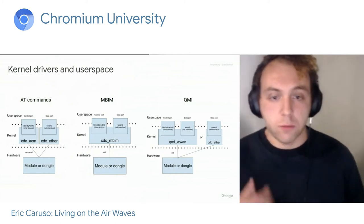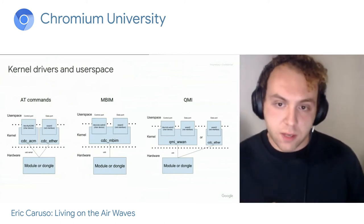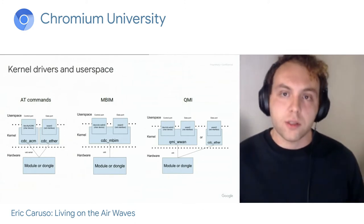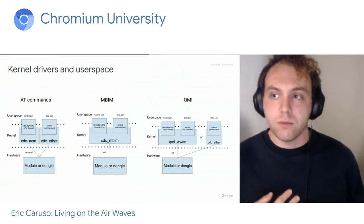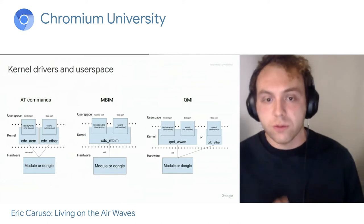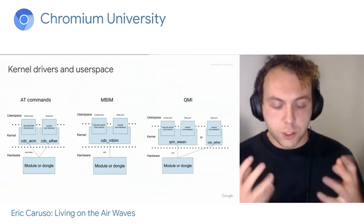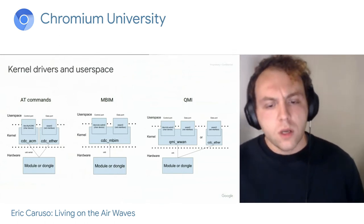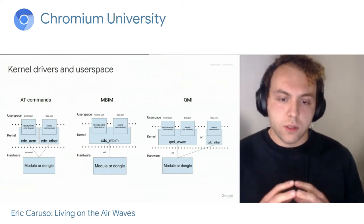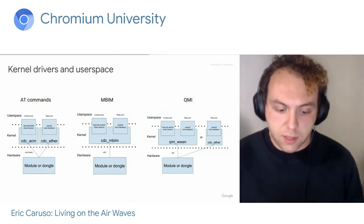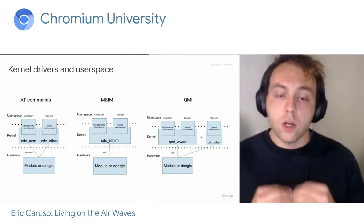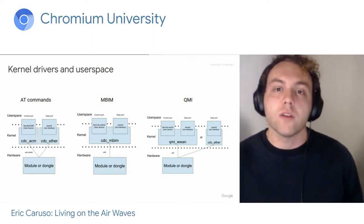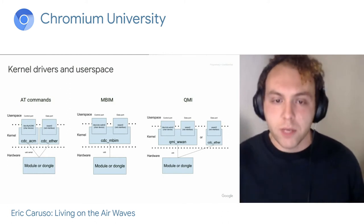MBIM — the Mobile Broadband Interface Model — is produced by Microsoft. It has a couple of advantages over AT commands: notably, its transport provides transaction IDs. Messages are serialized and deserialized in a TLV (type-length-value) format, so it's much easier for machines to parse. The specification is also open. And since it's produced by Microsoft, if you want to ship a module on a Windows system you must support MBIM — those are the drivers available in Windows. So a lot of modules we'd like to ship already support MBIM, and that's good.